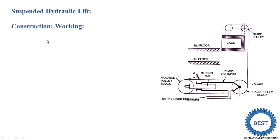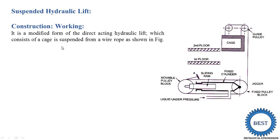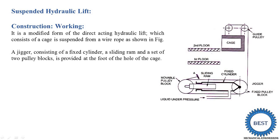First we understand its construction. In the construction, there are a number of components, and it is modified from a direct single acting hydraulic lift. The first component is the cage, which is suspended by using a wire rope as shown in this figure. The cage is where we stand and move from one floor to another. Another component is the Jaguar, which is mounted on a fixed pulley. Here there are two pulleys — one is the fixed pulley and the other is the movable pulley. Inside the Jaguar, it consists of a fixed cylinder — this dark component you see is the fixed cylinder — and inside the cylinder is the sliding ramp. In this cylinder, we supply liquid under pressure.